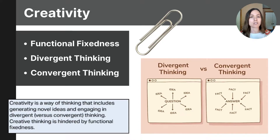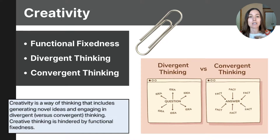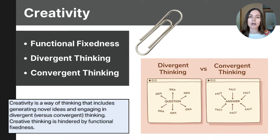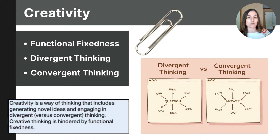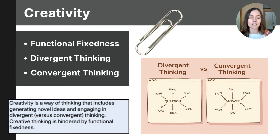It's important to explain the difference between divergent and convergent thinking. Divergent thinking is a creative approach to problem solving that occurs when a problem has multiple solutions. Convergent thinking applies when a problem has just one solution — in that case the person needs to narrow down the options to find the single correct answer. These topics cover what you need to know about creativity.